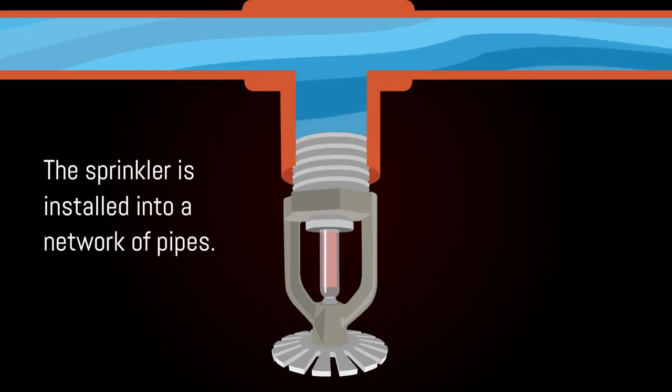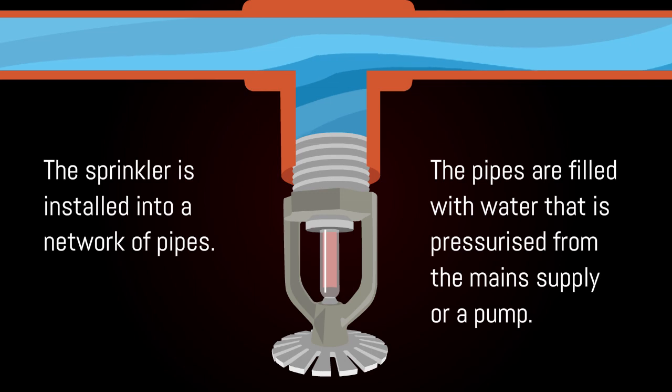The sprinkler is installed into a network of pipes. The pipes are filled with water that is pressurized from the main supply or a pump.